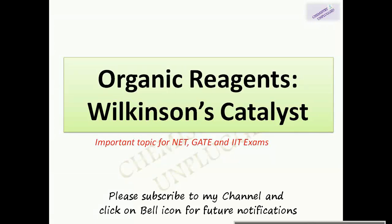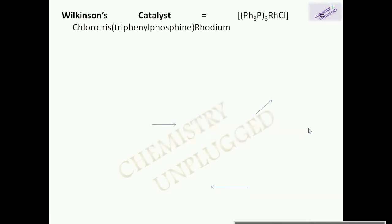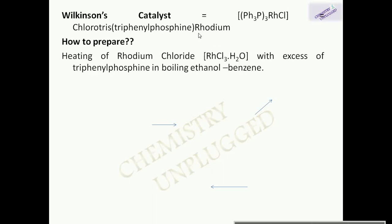Hello friends, welcome back to my channel Chemistry Unplugged. Today we will discuss Wilkinson's catalyst. Wilkinson's catalyst is chlorotris(triphenylphosphine)rhodium. It is prepared by heating rhodium chloride RhCl₃·H₂O with excess of triphenylphosphine in a boiling mixture of ethanol and benzene.